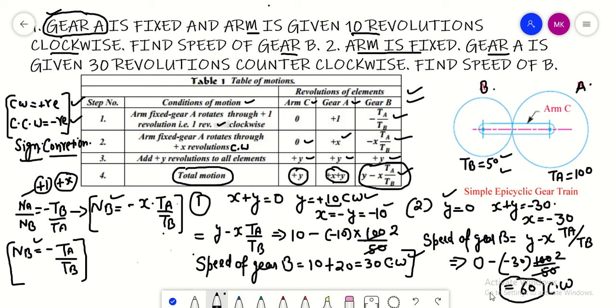That is how you can solve different questions based upon the epicyclic gear train. In the next video, we will take some more questions. This thing must be clear to you: the sign convention will be used by you only. You can take clockwise positive or negative, but the same convention should be used throughout the numerical.